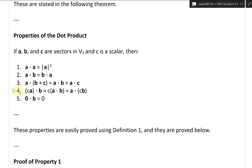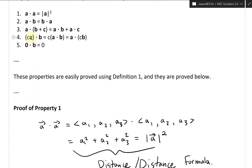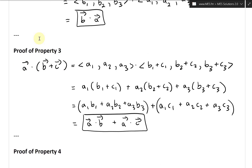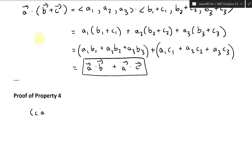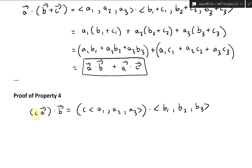Now let's look at Property 4: scalar C times A, dot product with B, equals C times (A dot B) equals A dot (C times B). We write C·A dot B in components: C times the vector A1, A2, A3, dot B1, B2, B3. We can multiply the scalar inside, giving us CA1, CA2, CA3 dot B1, B2, B3.